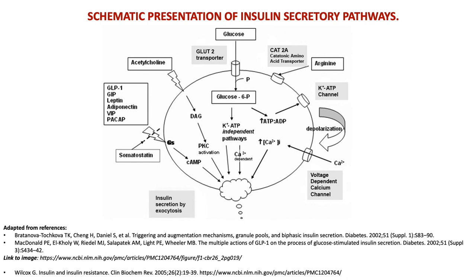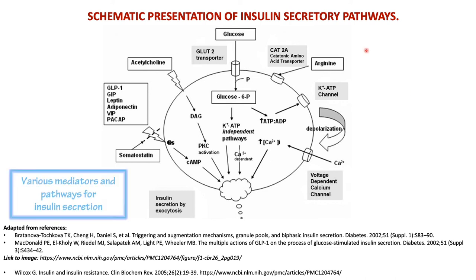In summary, the key pathways for insulin secretion include glucose acting via the GLUT2 transporter on the pancreatic beta cell, as well as acetylcholine, GLP-1, GIP — both released from the gut when we eat — and the amino acid arginine. These are the main mediators and pathways for insulin release.